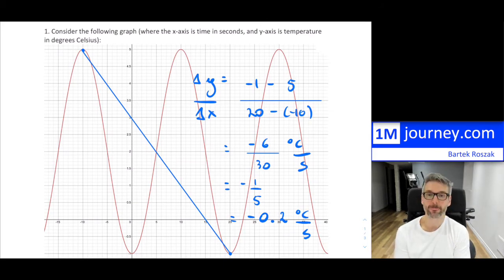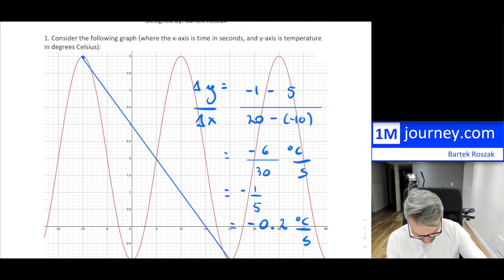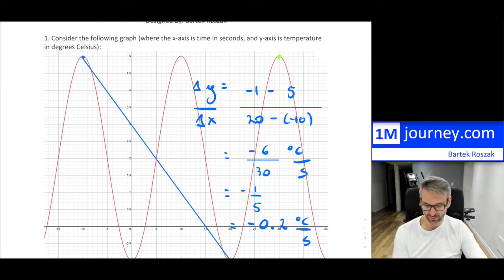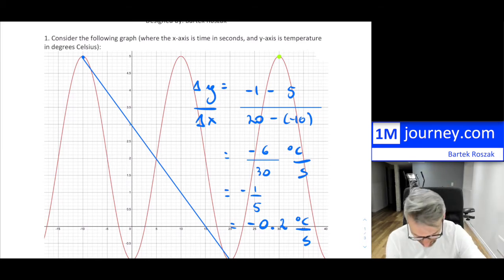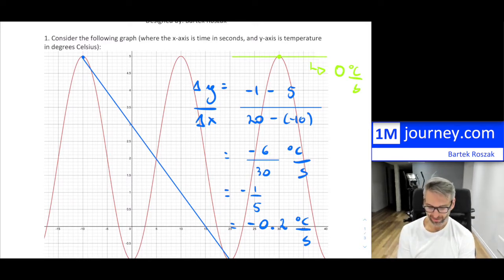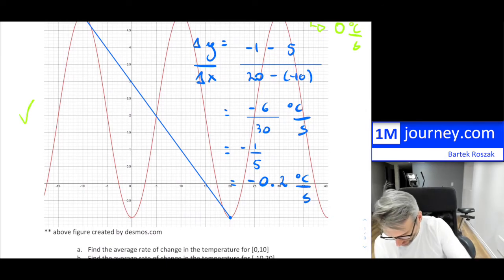Part (c) asks for the instantaneous rate of change at t=30. At t=30 we're at the peak of the graph. The tangent line at a peak is flat, so the instantaneous rate of change is zero. This makes sense because it's a maximum at that particular point.